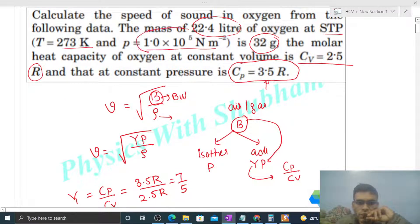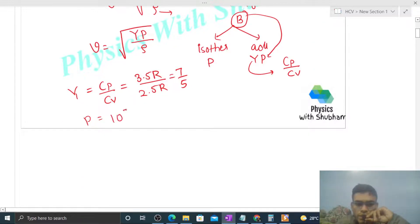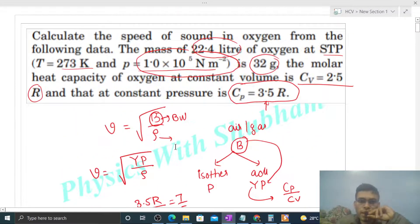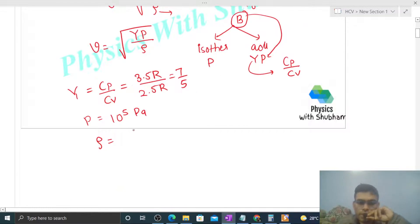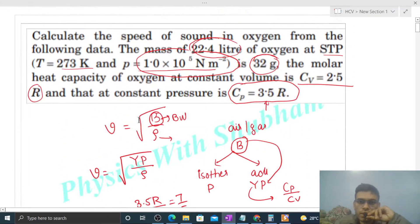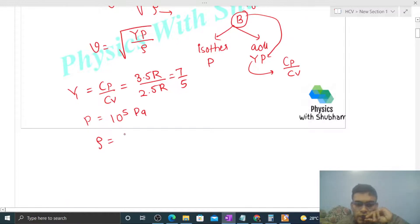Pressure value is directly given, pressure is 10 raise to the power 5 newton per meter square. And how to find density? You have mass and volume given. Mass is 32 gram and volume is 22.4 liter. So density will be mass, that's 32 into 10 raise to the power minus 3 kg divided by 22.4 liter, it means 10 raise to the power minus 3 meter cube.